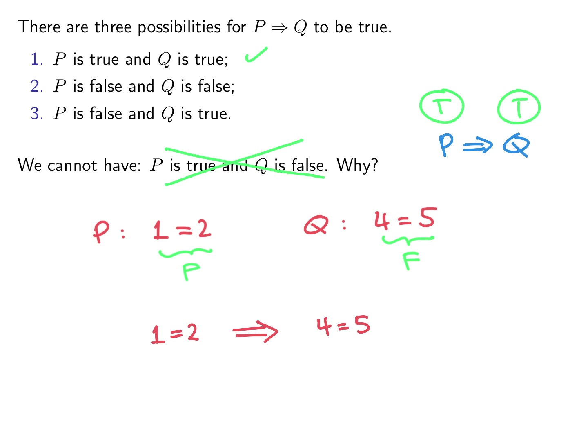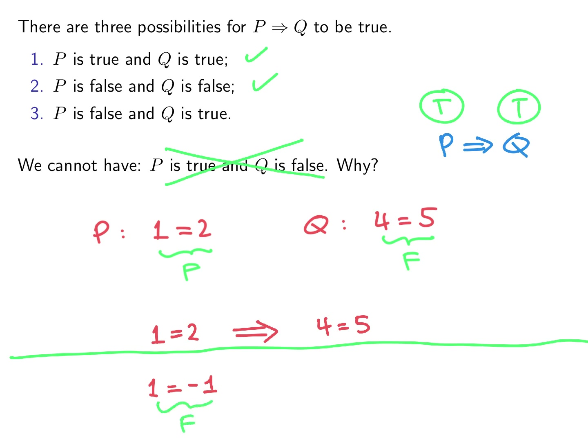What about the case where P is false and Q is true? Can a false statement imply a true statement? Actually, yes. For example, let P be '1 equals negative 1,' which is false. If we square both sides, we get 1 equals 1, which is a true statement. So we start with a false statement and get a true statement. In fact, using just one false statement, we can prove anything.